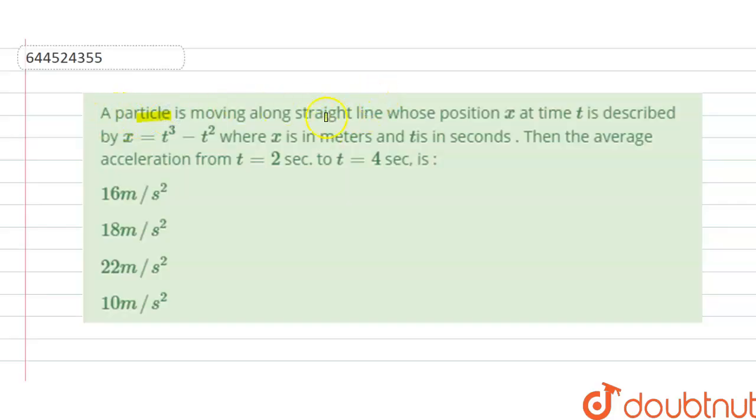A particle is moving along a straight line whose position x at time t is described by x equals t cube minus t square, where x is in meters and t is in seconds. Then the average acceleration from t equals 2 seconds to t equals 4 seconds is. Options are given to us, so we have to find the correct option.